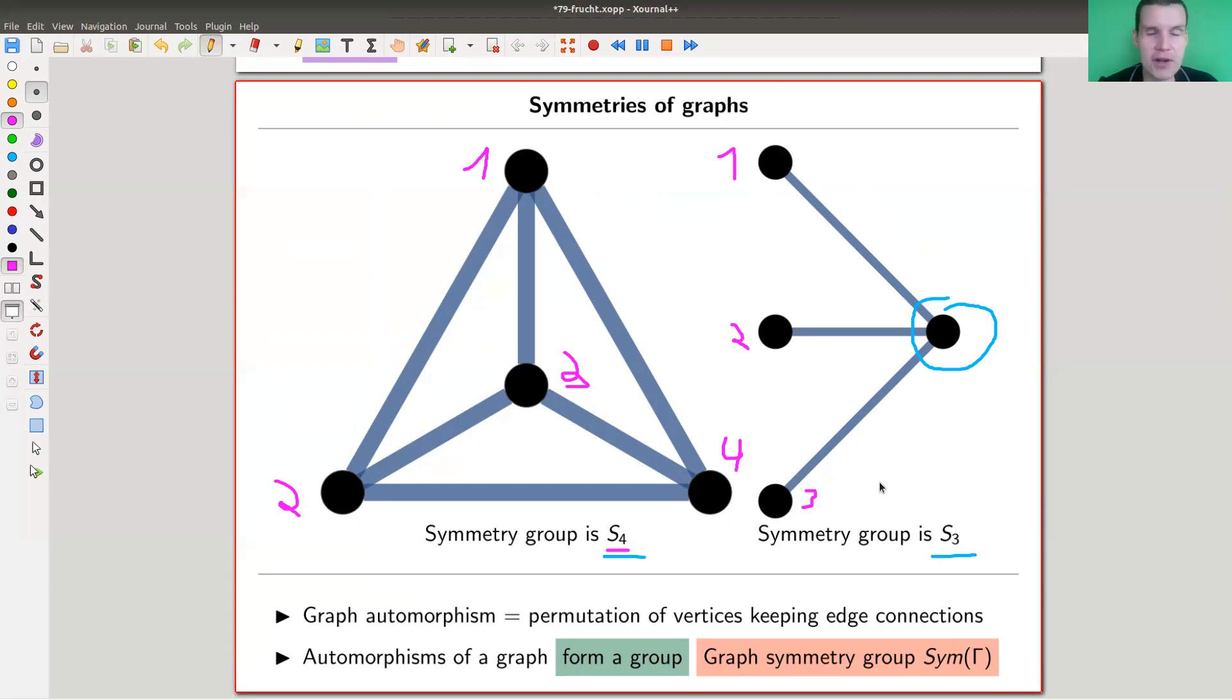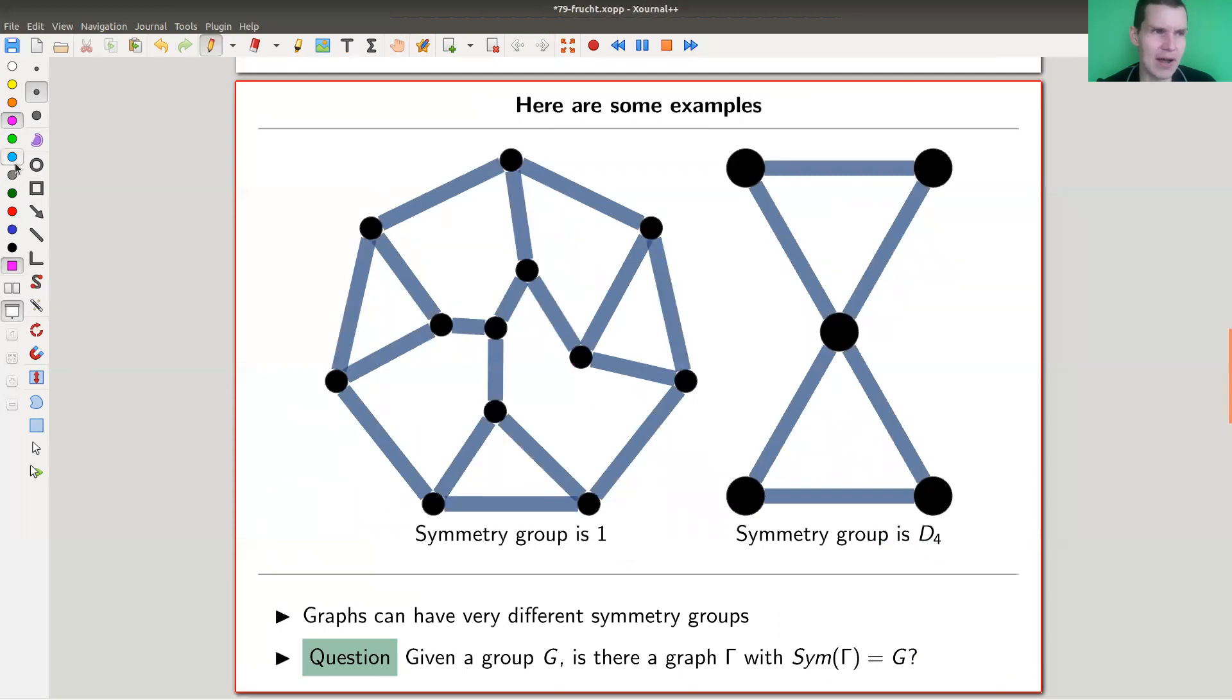And kind of the question you would like to ask, we'll see that in a second, is for a given symmetry, for a given group, can you actually find a graph realizing that symmetry? And it isn't all that obvious. So here are a few more examples. So most graphs are actually completely asymmetric. So this one is a fun example. It's called Frucht graph, like the theorem, Frucht theorem. It's a graph which is not obviously asymmetric.